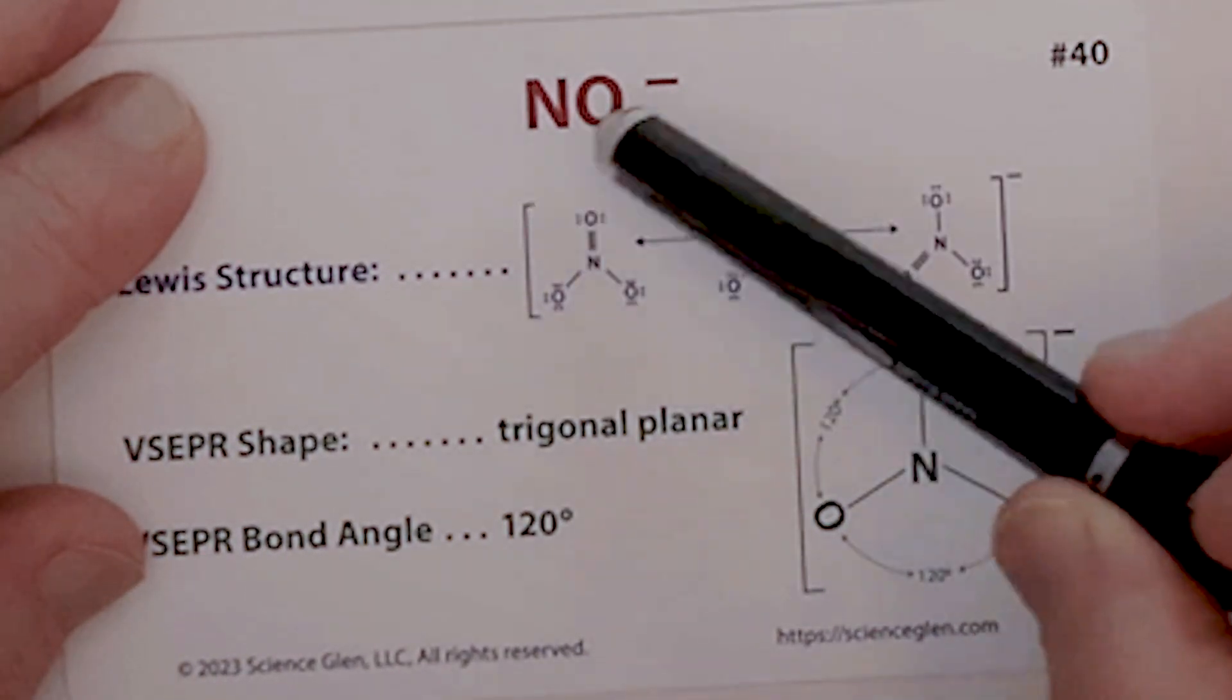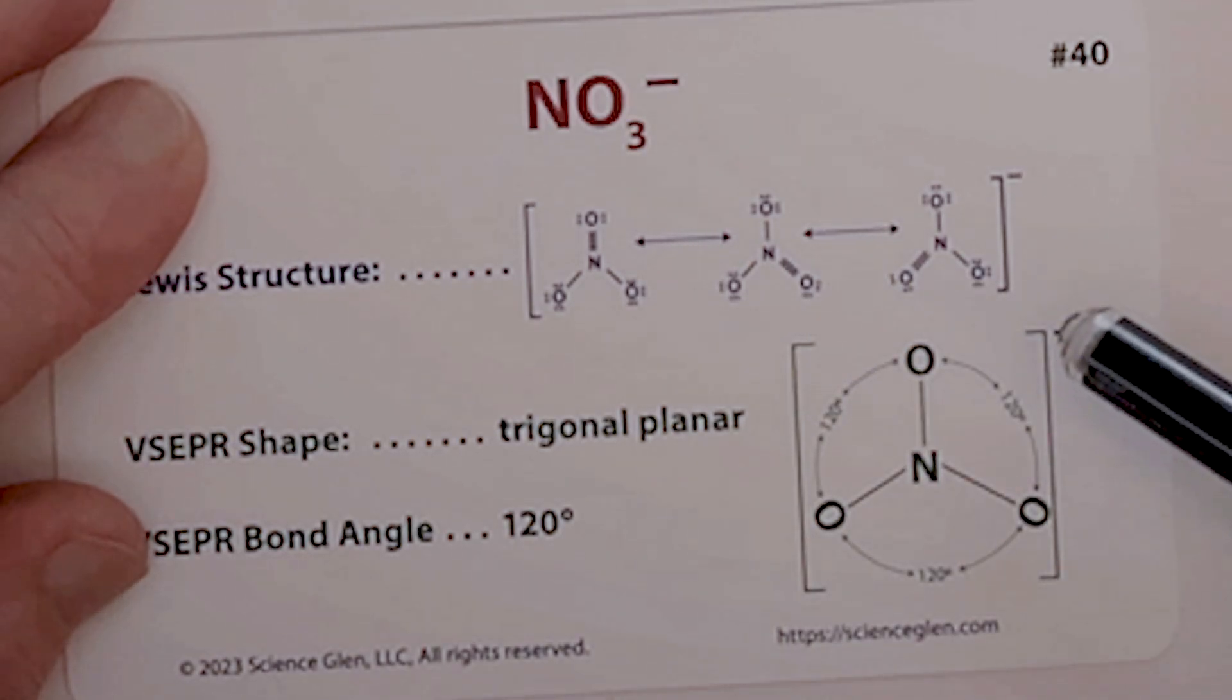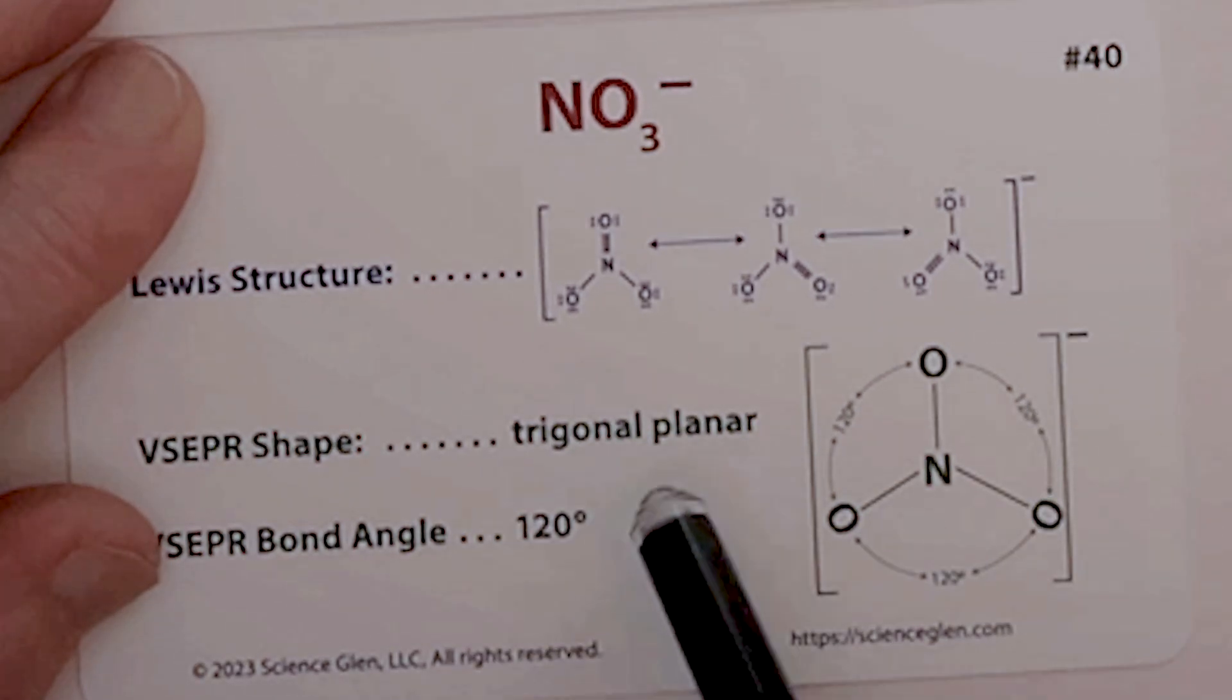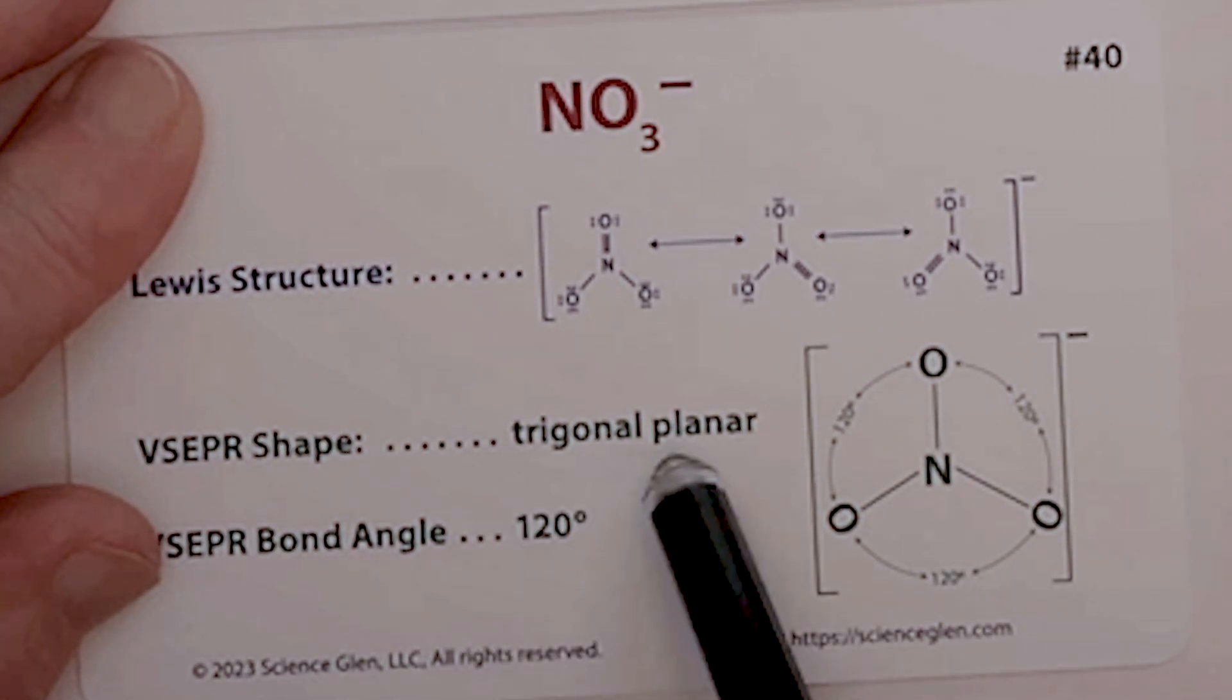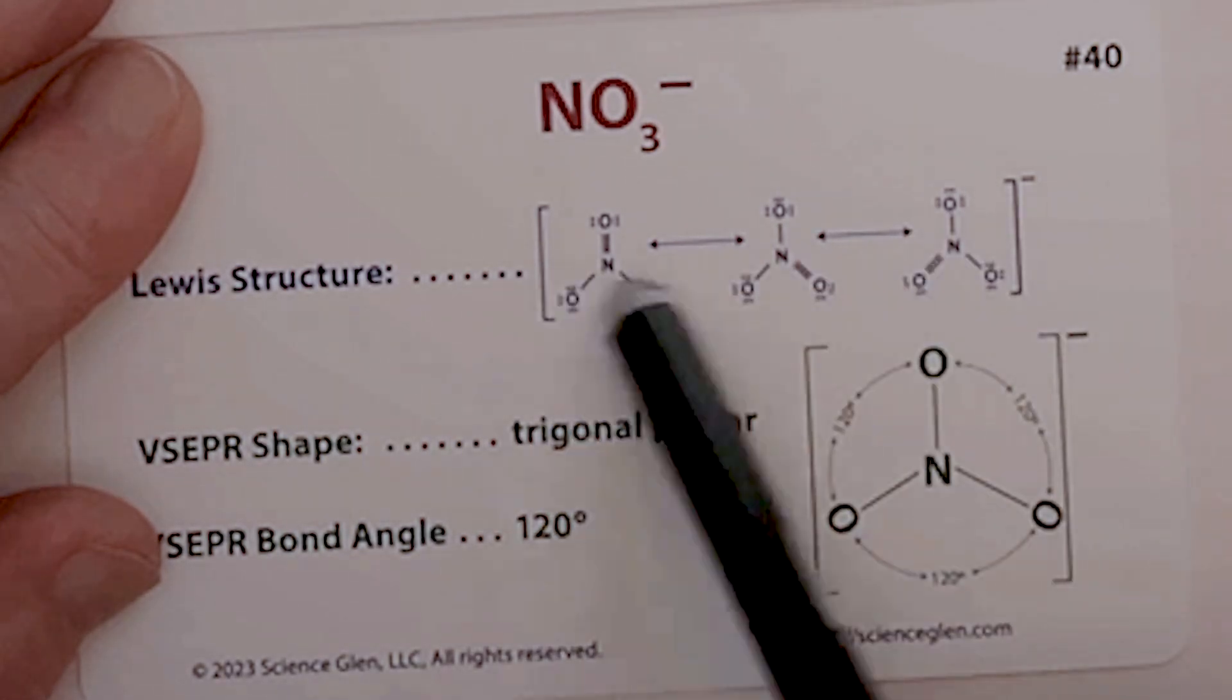Nitrate is a nitrogen and three oxygens strung together in this sort of flat circular arrangement, sort of like a CD, and it's trigonal planar. It's got three different versions, and it goes in between these three. That's called resonance.